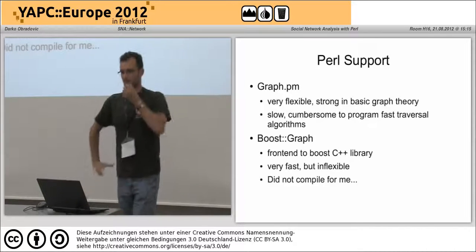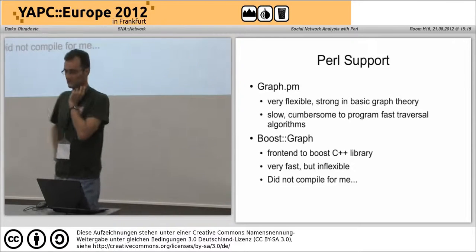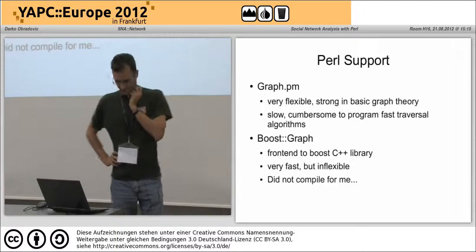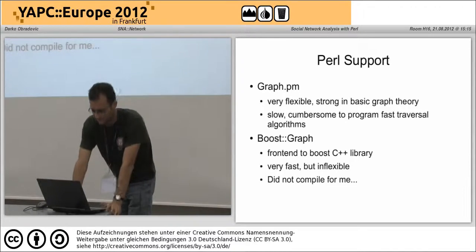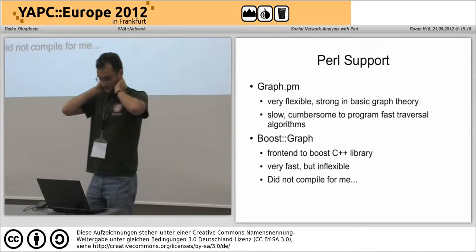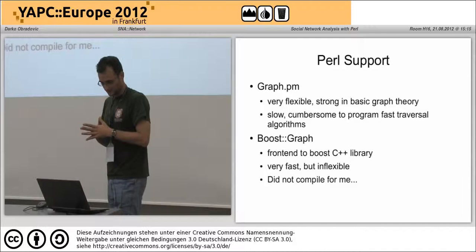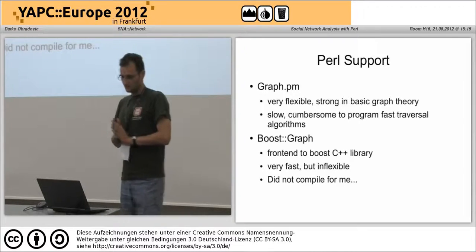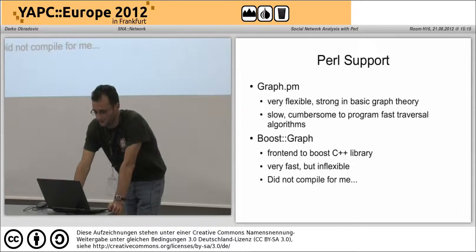In Perl there already exists on CPAN the Graph module, which is quite nice because it offers all the basic things about graph theory, but graph theory is not what social network analysis really does — it's not about transposing matrices or eigenvalues. Graph.pm comes relatively fast to its limits for large networks. There also exists Boost::Graph, which is an interface to a C++ library intended to be very fast — but the problem is you have to use only the algorithms which are in Boost, and getting your data in is also a challenge.